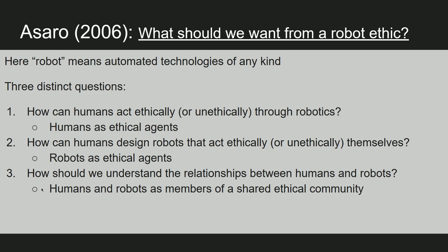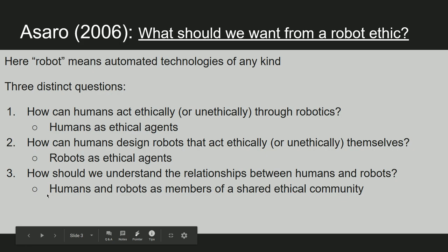And then finally, the third question is how can we understand the relationship between humans and robots — the way humans treat robots, maybe the way robots treat humans, the social and political nature of that interaction. In this case we're not just looking at humans or robots as ethical agents, but at the community of humans and robots as a shared ethical community.